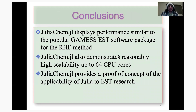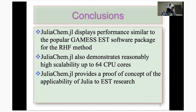Based on comparisons to the popular GAMESS electronic structure theory software package for the restricted Hartree-Fock method, by combining its efficient performance compared to GAMESS as well as reasonably high scalability up to 64 CPU cores, JuliaChem provides a proof of concept for the applicability of Julia to electronic structure theory research — demonstrating that Julia can, in fact, be applied to computations required in quantum chemistry.